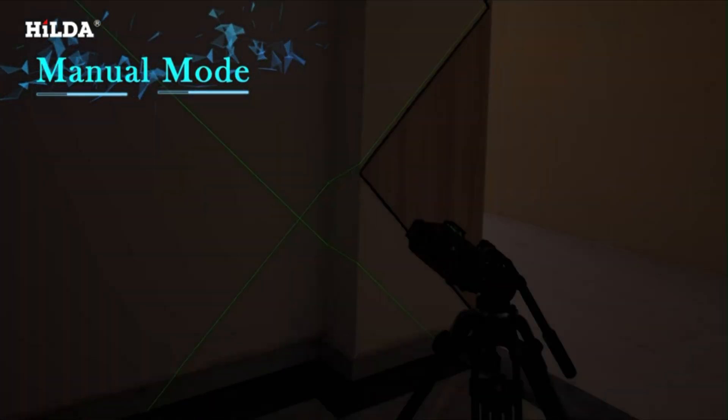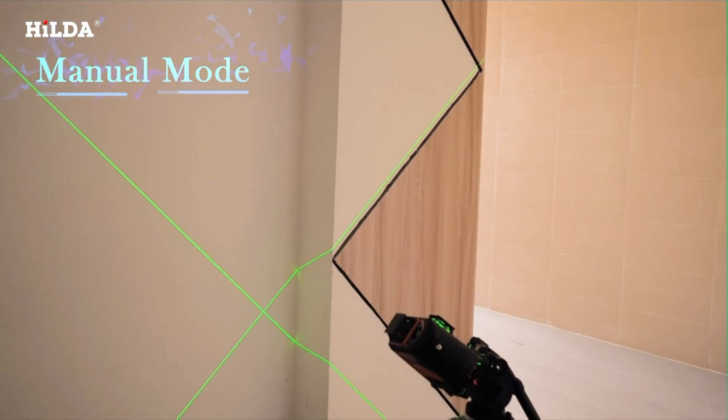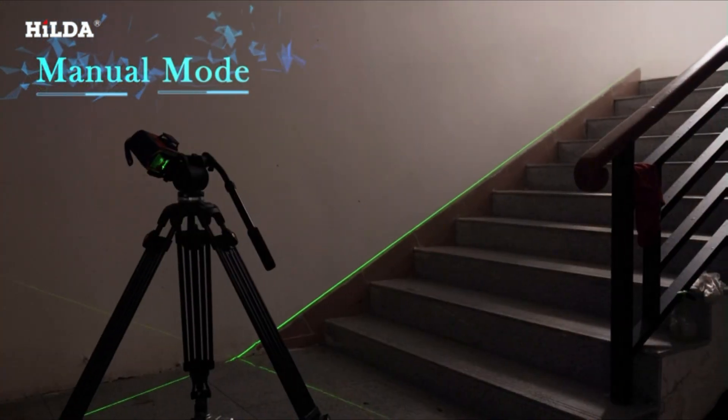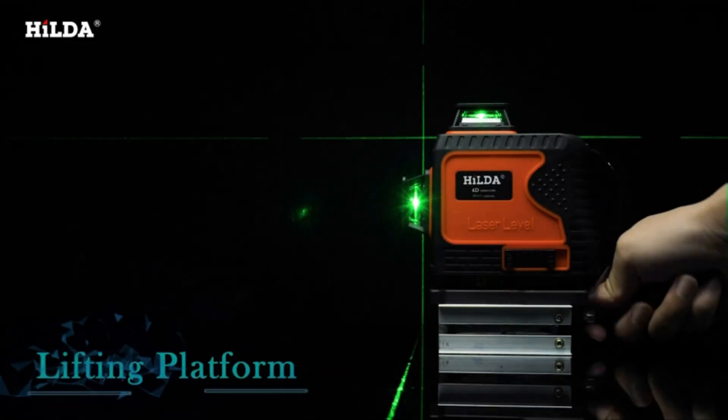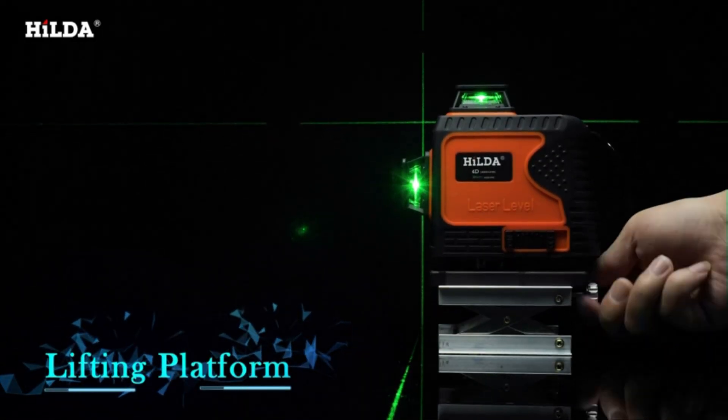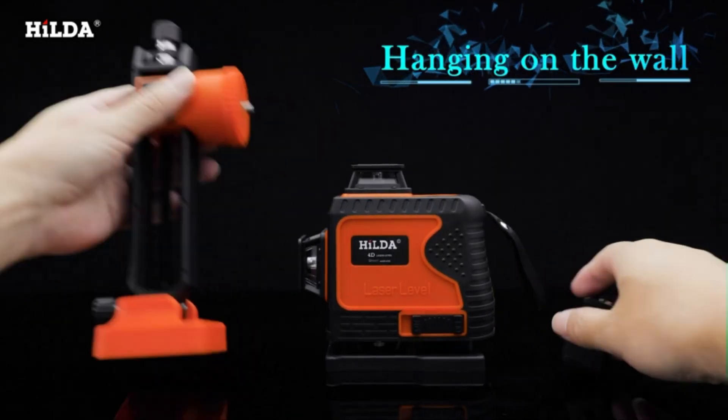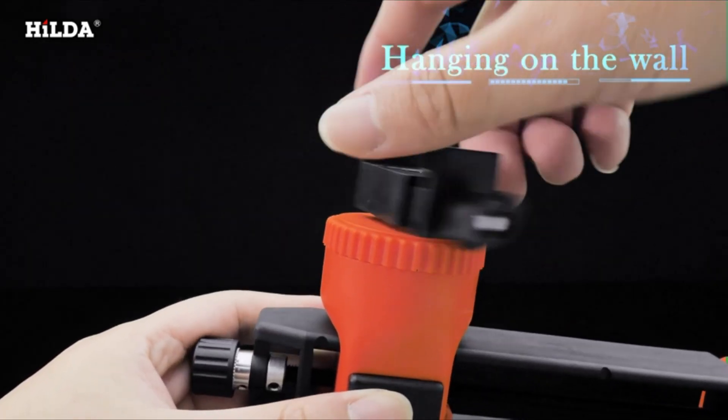HILDA laser level can be used in various indoor and outdoor scenes, you can choose the laser brightness according to the use environment. There is a button on the top to control the intensity of the laser. You can switch the laser of three intensities. Use a stronger laser in a bright and a weaker laser in a dark to protect your eyes. You can also use the remote to control the laser intensity.